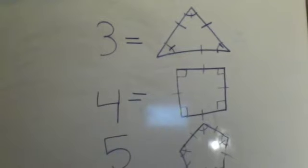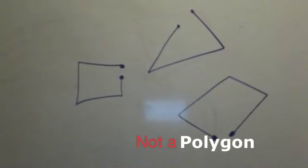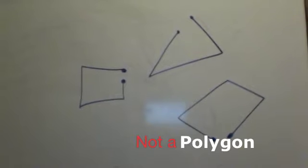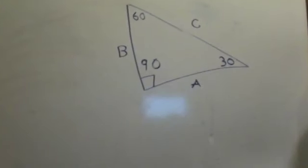Shapes that aren't closed are not polygons. And if it has different sides and angles, it's a polygon, it's just not regular.